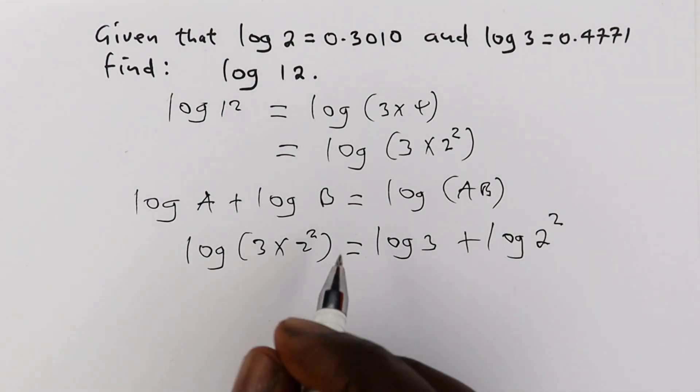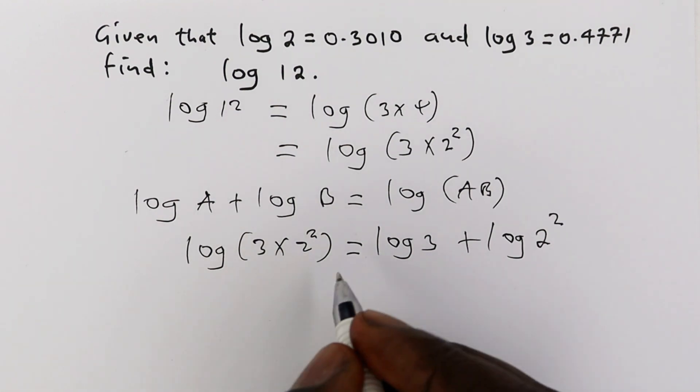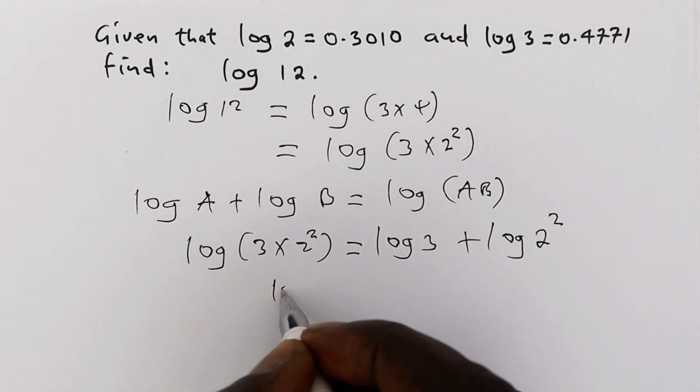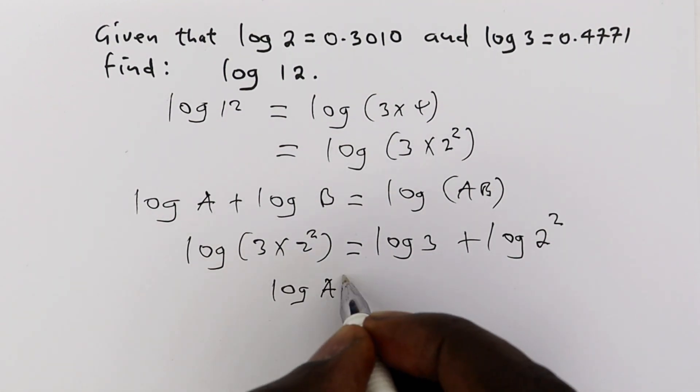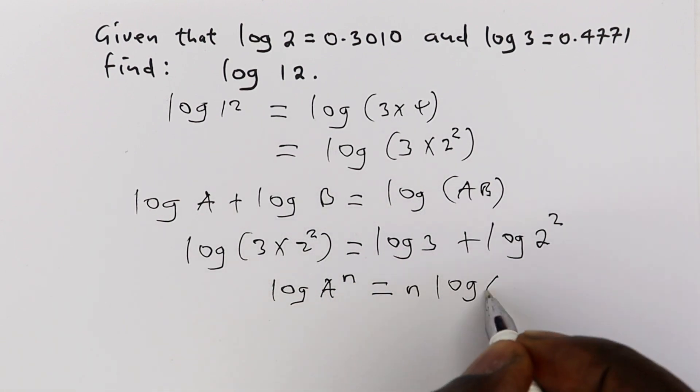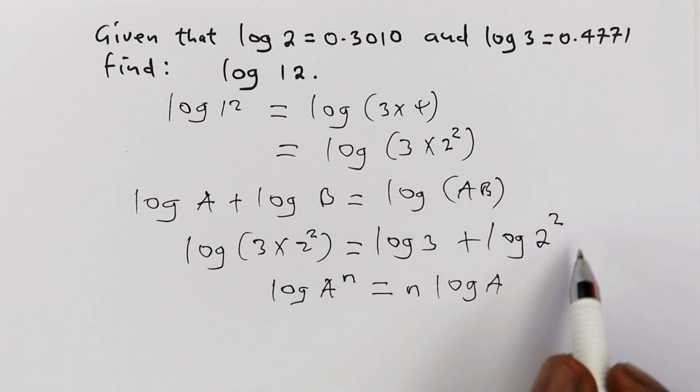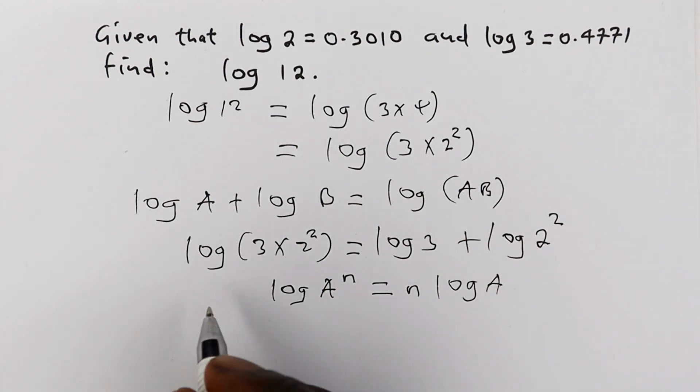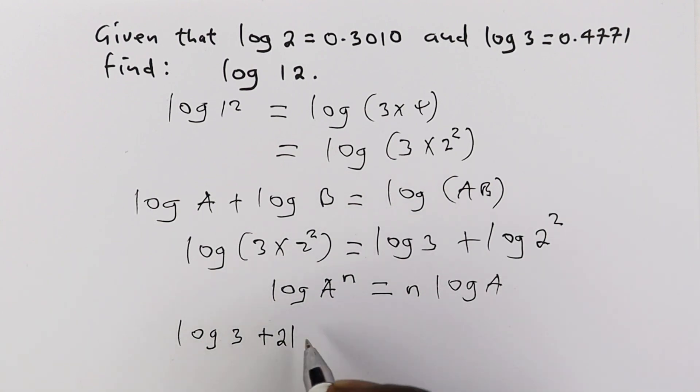And then if we use the third law of logarithms, if you have a log of a number A raised to power n, it can be written as n log of that number. So we can use that to rewrite the last log there, so that we have log 3 plus 2 log 2.